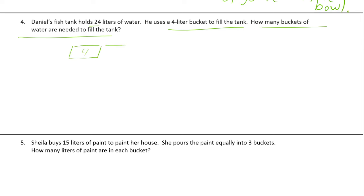Number five: Sheila buys 15 liters of paint to paint her house. She pours the paint equally into three buckets. How many liters of paint are in each bucket? You might know this right off: three buckets, and it's going to be 5, 10, 15 — five in each. But if you didn't know, you could show it by distributing.